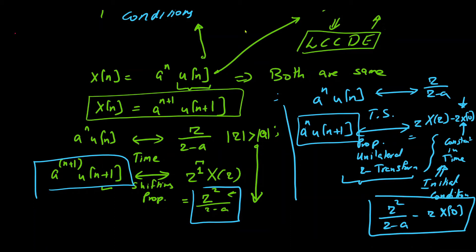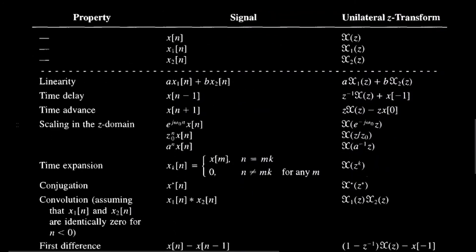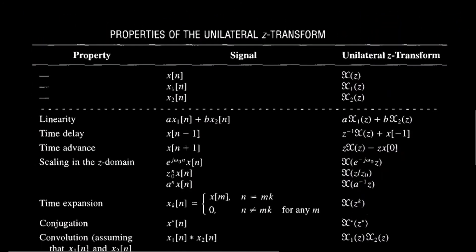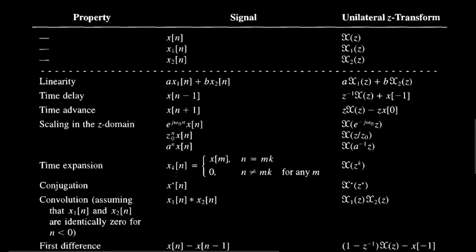We have used one specific property of the unilateral z-transform, but there are several others given in a properties table. These include linearity, time delay, time advance — which we used in the present example — scaling in the z-domain, time expansion, conjugation, convolution, and so on. Most of these properties have very similar proofs to the bilateral z-transform; however, the main difference is with respect to time delay and time advance. Let us look into the time delay property and prove it.